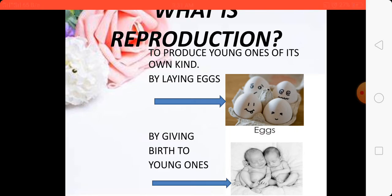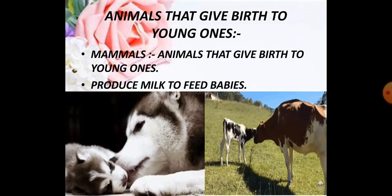First we will talk about animals that give birth to babies. Animals that give birth to the young ones — that means those who give birth to babies — they are called mammals. These animals who give birth to babies produce milk, and this milk is used to feed their young ones.